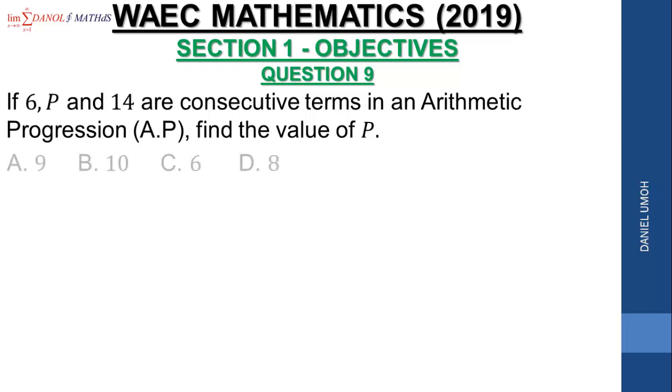Below are the options. Let's quickly look at the solution. Now, the consecutive terms are 6, P, and 14. So it means that the common difference...